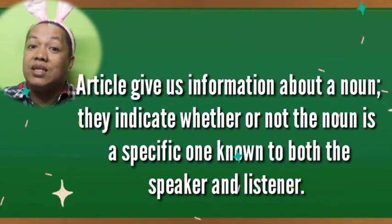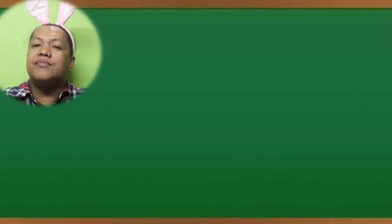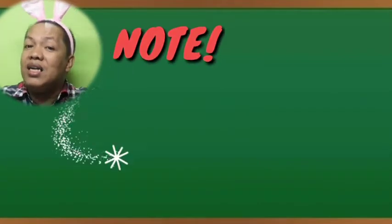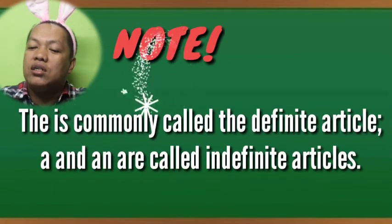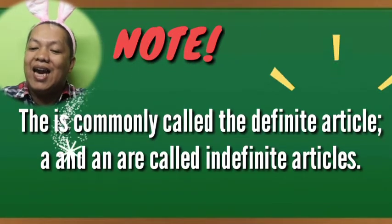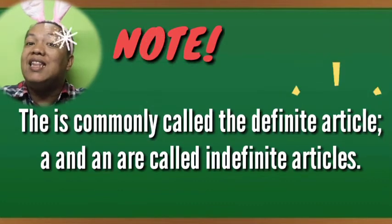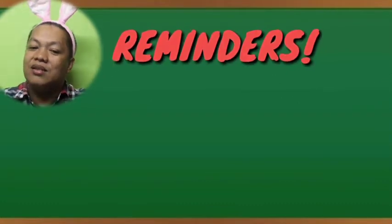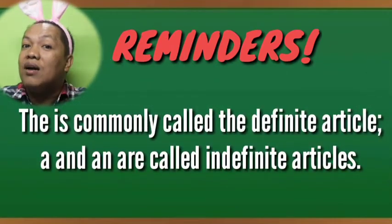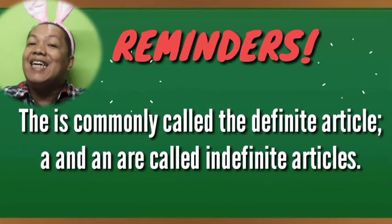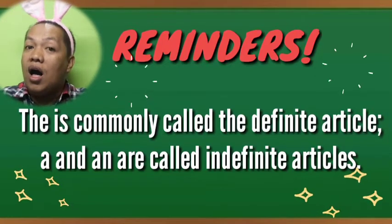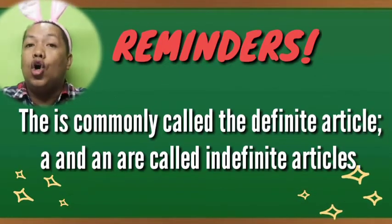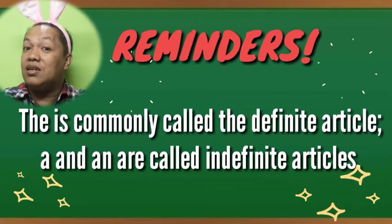Examine again the two sentences provided. Note that 'the' is commonly called the definite article, while 'a' and 'an' are called indefinite articles. Let me remind you again: the article 'the' is commonly called the definite article, meanwhile the articles 'a' and 'an' are called indefinite articles.